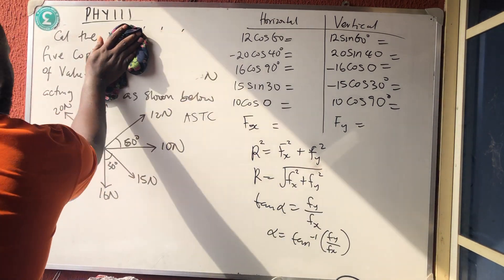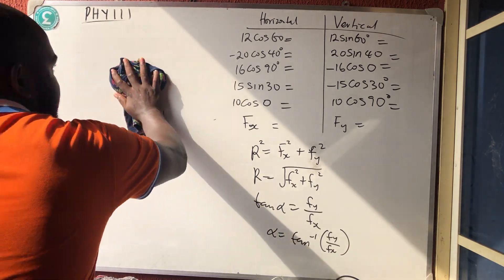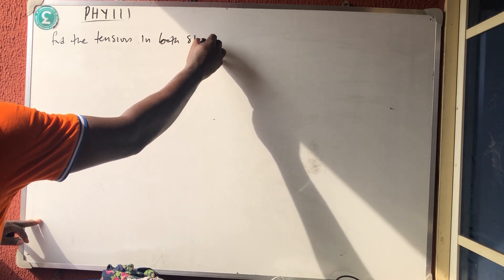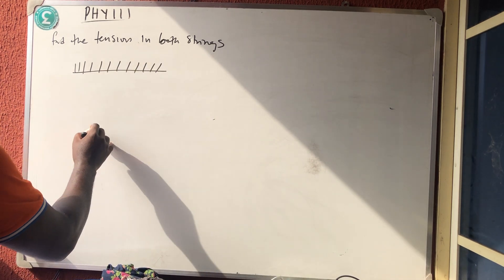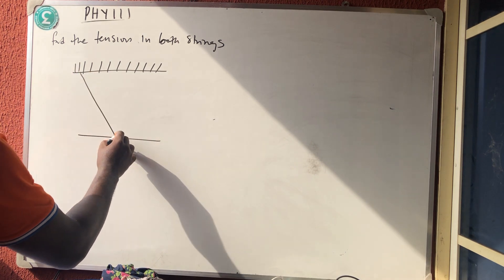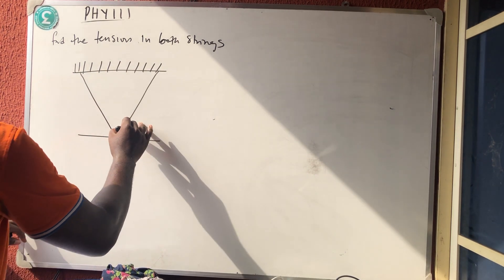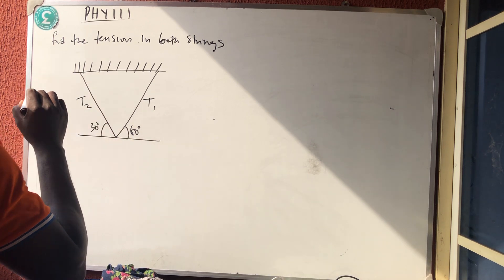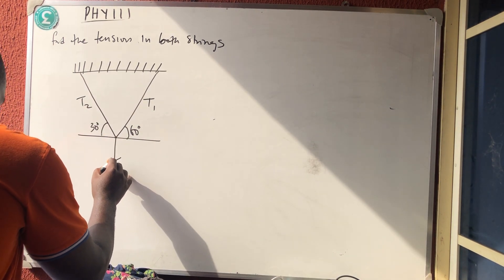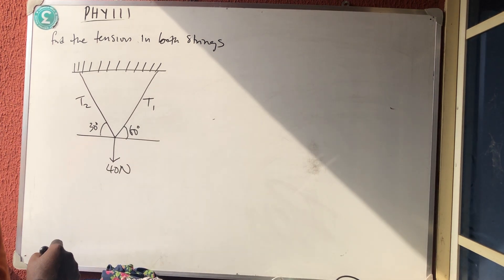Get the answer and share it in the comment section. The next question asks us to find the tension in both strings. Two strings start from a point: one at 60° (tension T1) and one at 30° (tension T2), with a 40 Newton load hanging below.